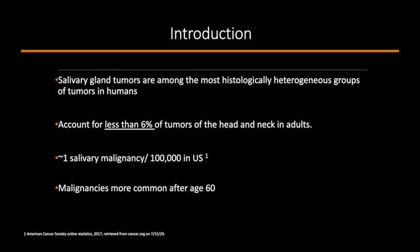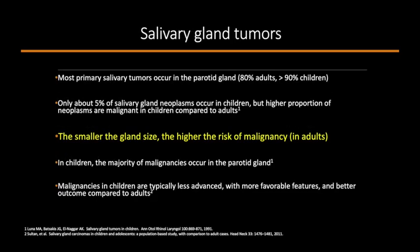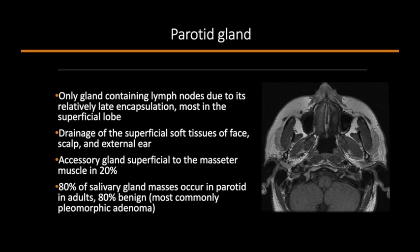Salivary gland tumors are among the most histologically heterogeneous groups of tumors in humans. They mostly occur in adults and account for less than 6% of tumors of the head and neck, amounting to approximately one salivary gland malignancy per 100,000 people in the U.S. Most primary salivary tumors occur in the parotid gland. Only about 5% of salivary gland neoplasms occur in children, but a higher proportion are malignant in children. The smaller the gland size, the higher the risk of malignancy in adults. Due to its relatively late encapsulation, the parotid is the only salivary gland to contain lymph nodes, most in the superficial lobe, providing drainage of the scalp, face, and ear.